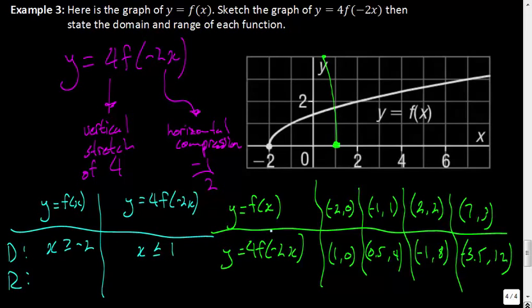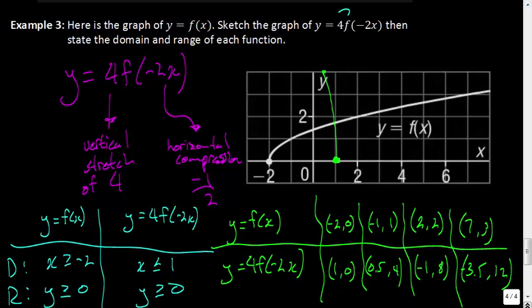How about the range? The smallest y value is the same for both functions — y has to be greater than or equal to 0 for both. My hope is that you understand how to deal with the a value: how to determine if it is being stretched or compressed, and notice that this changes our y-coordinate, while the value inside changes our x-coordinate — with the key exception that it's the reciprocal for the horizontal direction. That concludes this lesson.